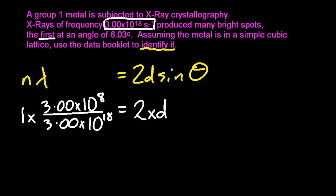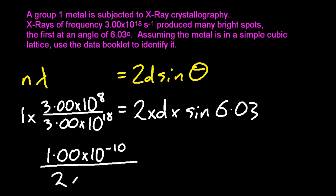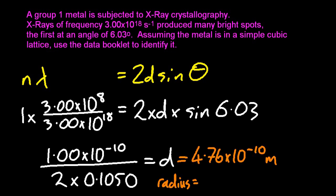So d is the distance between the planes, which we can also assume is the diameter of the atom. And so d is 4.76 times 10 to the minus 10 meters. I'm going to half that to get the radius.